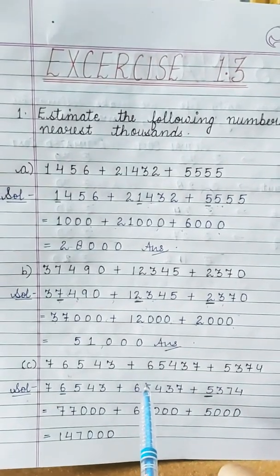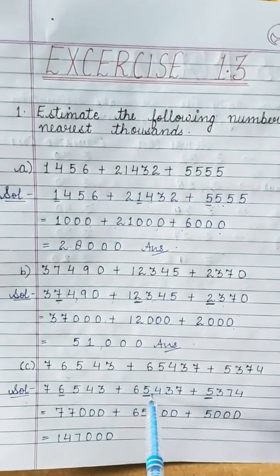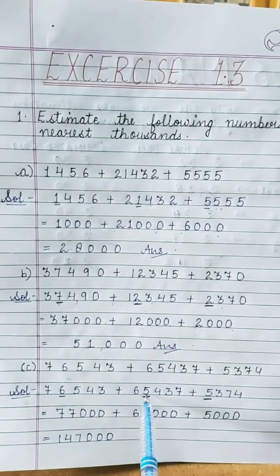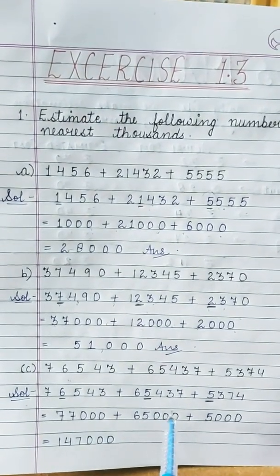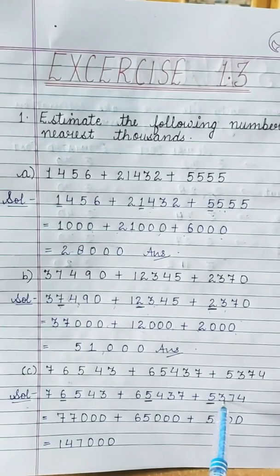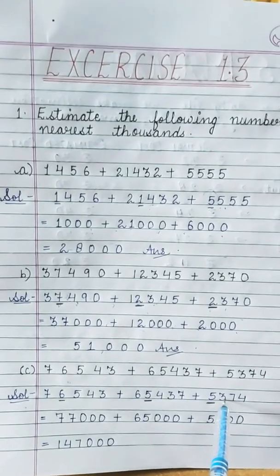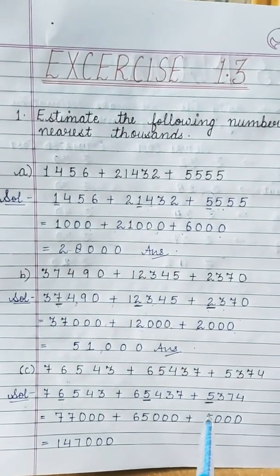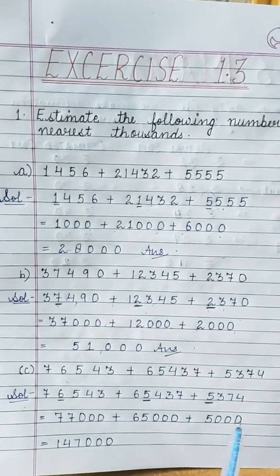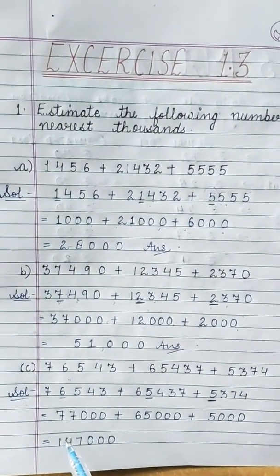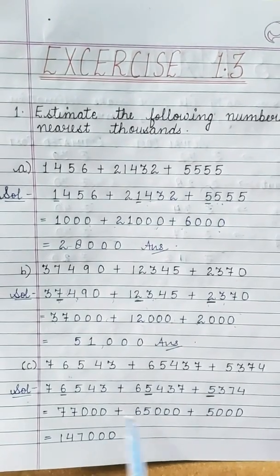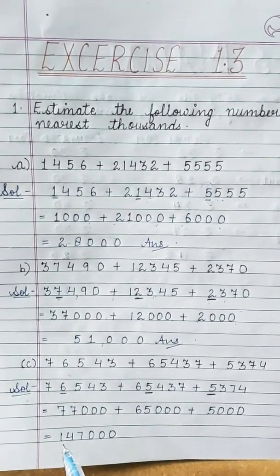For 5374, observe 3 — less than 5 — so 5 remains as it is and the rest of the digits are replaced by 0, giving 5000. Now add all these numbers to get the required answer.